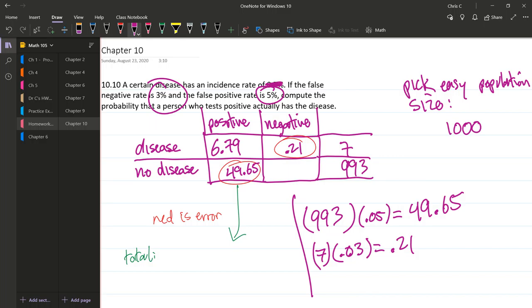So we need to figure out the other two entries in this table. For people with the disease, there's seven total. So these two boxes have to add up to make 7. So that's some easy subtraction. That gives us 6.79. 6.79 plus 0.21 gives us 7.